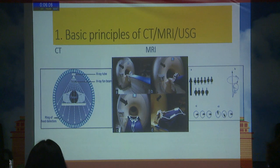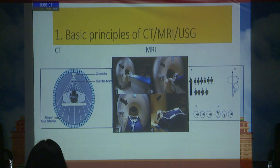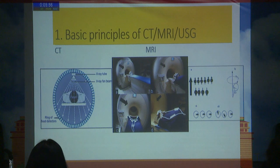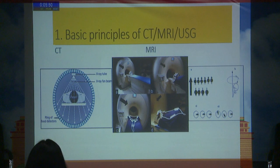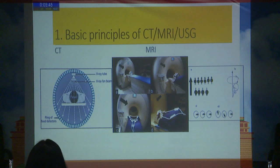The basic principle of CT, as we all know, is that x-ray beams pass through the patient's body and depending on the tissue densities there is attenuation of these x-ray beams, which are detected by detectors and then the computer generates images according to the tissue densities. These are demonstrated as iso, hyper, or hypodense.